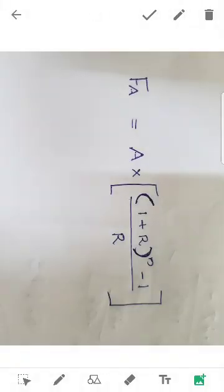The equation for future value of annuity is: FVA = A × [(1 + r)^n − 1] / r. Here, A is the installment amount, r is the interest rate, and n is the number of times (number of installments or periods).